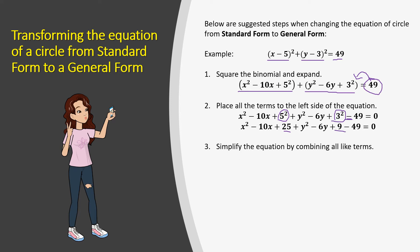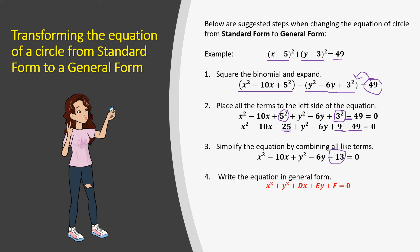Now let's simplify the equation by combining all like terms. The like terms 25, 9, and negative 49 are combined, giving us negative 13. Now let's write the equation in general form: x squared plus y squared plus dx plus ey plus f equals to zero, where d, e, and f are constants. This is our final answer.